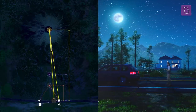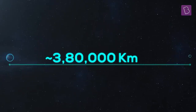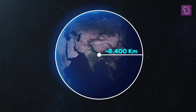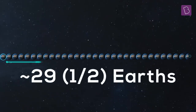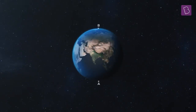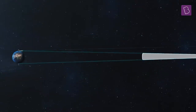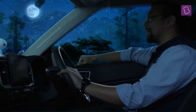If the mountain is one kilometer away and already has only a small angle of head turn, imagine how far the moon must be. It is about 3,80,000 kilometers away from the Earth, while the radius of the Earth is about 6,400 kilometers — meaning you can fit 29 and a half Earths between the Earth and the moon. That is so far away that even if we were to move across the entire Earth looking directly at the moon, we would need a head turn of only about 2 degrees. This is why it barely moves in our field of view, giving us the illusion that it's following us.